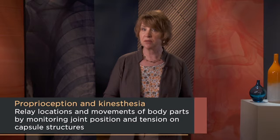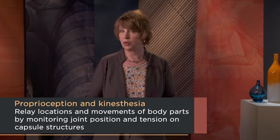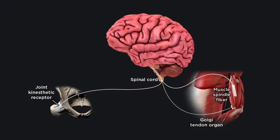The capsule also contains sensory nerve endings — not just for pain, but also for the senses of proprioception or kinesthesia, which relay the locations and movements of our body parts by monitoring joint position and tension on the capsule structures. Our nervous system uses these signals to help us balance as we move, and they're also the reason we know where our body parts are in space without looking. Monitors known as joint kinesthetic receptors, Golgi tendon organs, and muscle spindle fibers all relay proprioceptive sensations. Brain regions and the inner ear are also involved in balance, but some incoming information comes from sensory receptors in the joints and surrounding muscles.